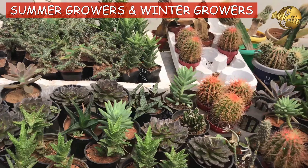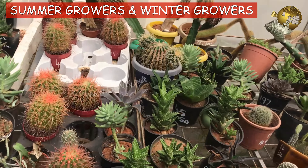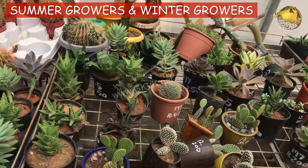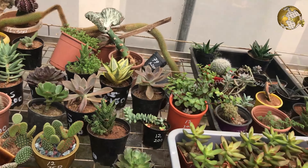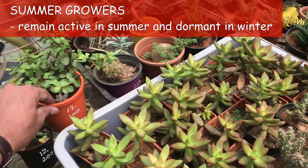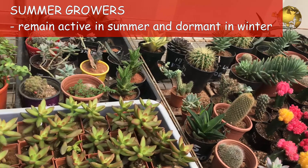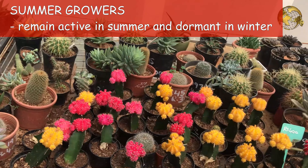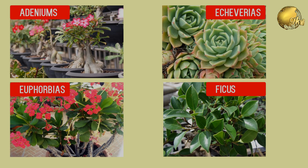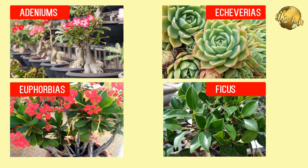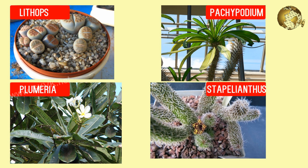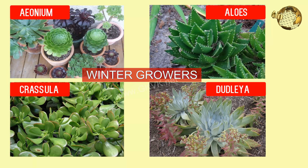Instead, we will use the Summer Growers and Winter Growers grouping for practical purposes. The Common Summer Growers, i.e., winter dormancy succulents, meaning they remain active in summer and dormant in winter. They are grouped into the following species: Adenium, Echeveria, Euphorbia, Ficus, Lithops, Pachypodium, Plumeria, Stapelia, etc.